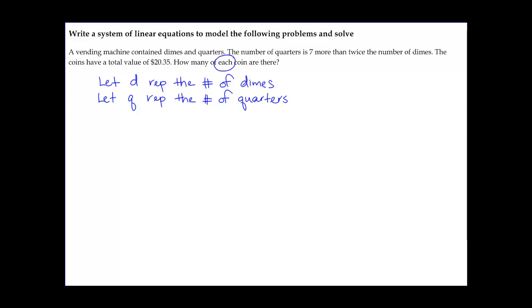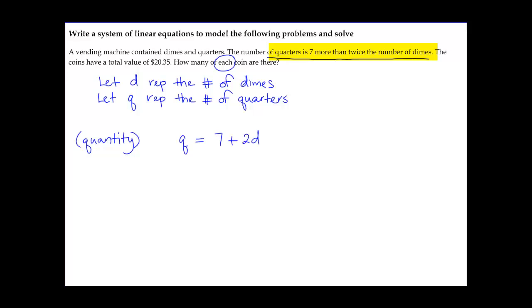Once we've identified the two variables, we need to write two equations, because with two unknowns we need two equations to solve. The second statement says the number of quarters is seven more than twice the number of dimes. Converting that sentence directly into an equation: q equals 7 plus 2d. That's our first equation.